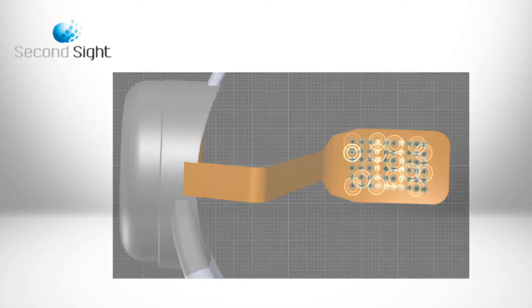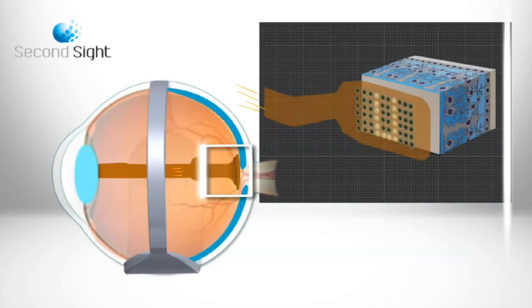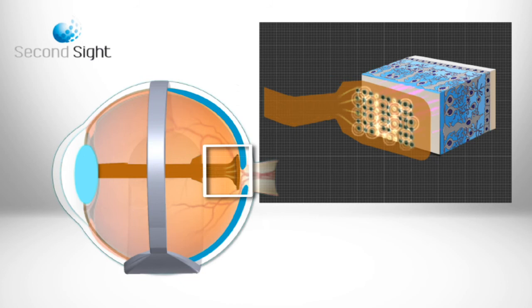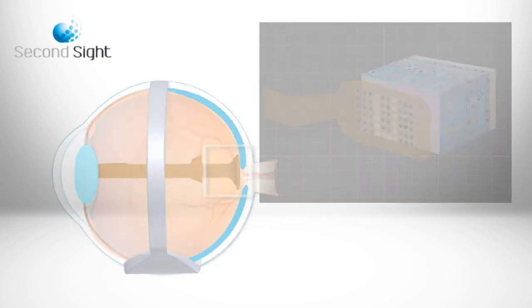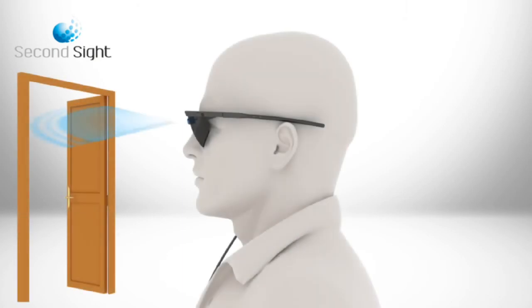Instructions are received and corresponding signals sent to the array which emit small pulses of electricity. These pulses stimulate the retina's remaining cells and are transmitted down the optic nerve.